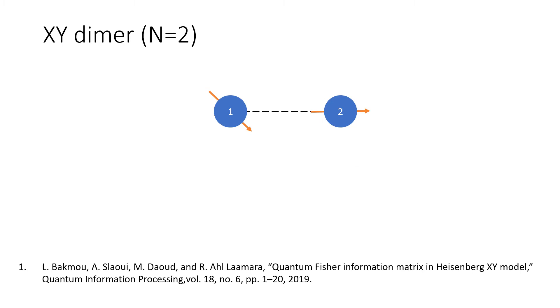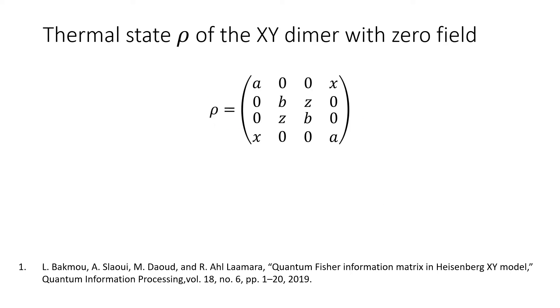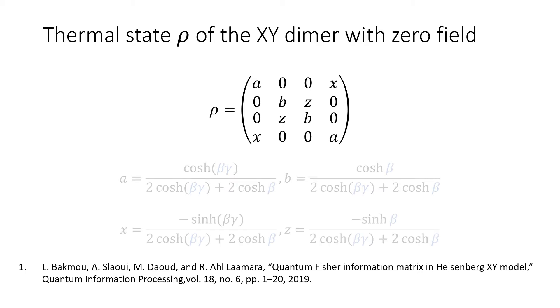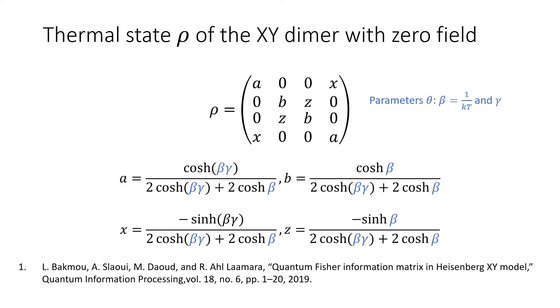My study focuses on the XY dimer, a simple case of the chain where only two lattice sites are considered. XY dimers, free from any influence of magnetic fields, can have their thermal states parameterized by anisotropy and temperature. This state will be used to calculate entanglement detection using quantum Fisher information.